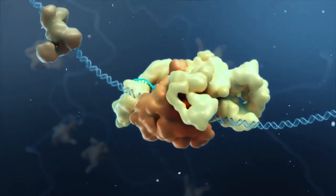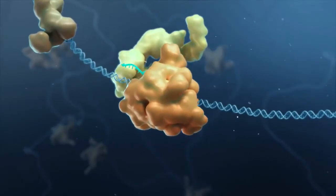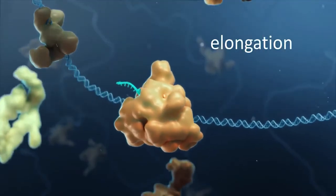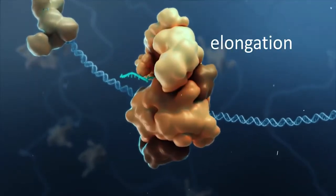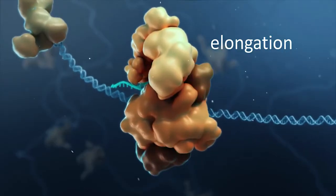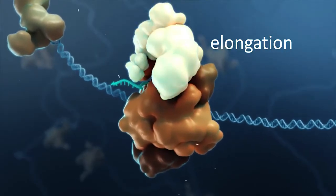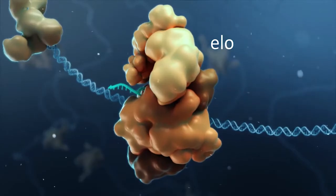After initiation, these factors dissociate and are replaced by elongation factors that help with RNA production. Some elongation factors keep POL2 paused, while others release POL2 from its paused state.